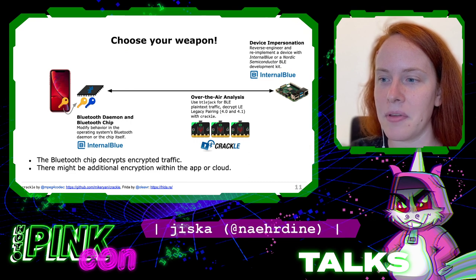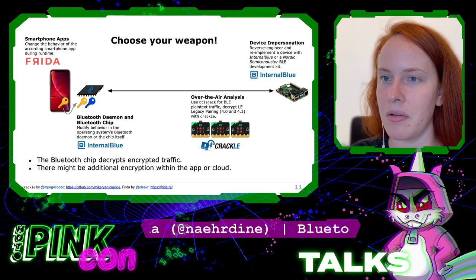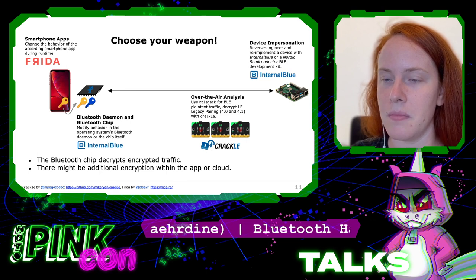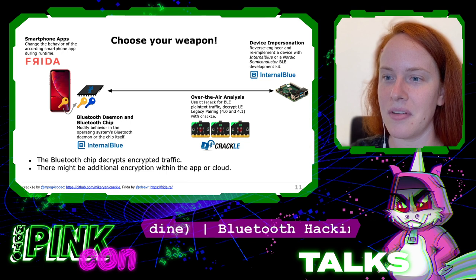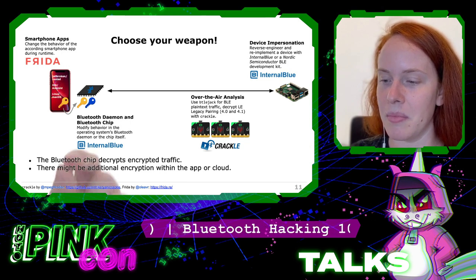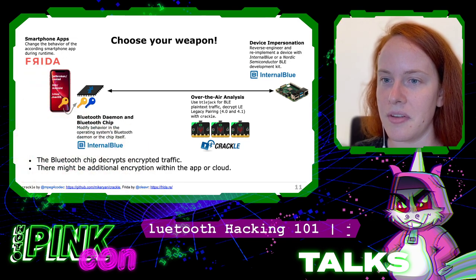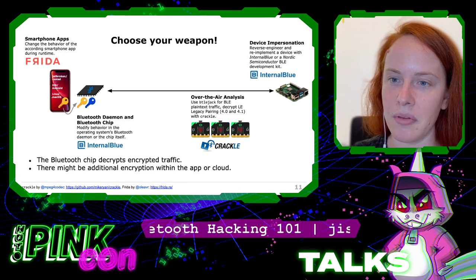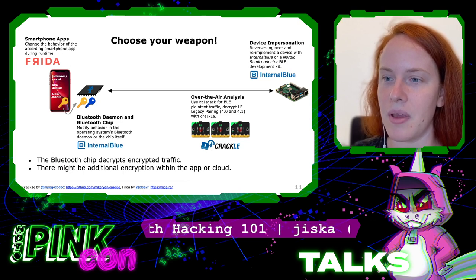The last option is that you hook into the smartphone app. This might be helpful if the smartphone app does additional encryption that is not handled within the cloud part of the IoT app, and you can do this with Frida. There are a lot of tools depending on what you want to achieve. The two on the left-hand side are probably the most powerful, but they require a device that's rooted or jailbroken — at least on iOS and Android; on Linux and macOS it just works as-is — but again, not all devices may be under your control.